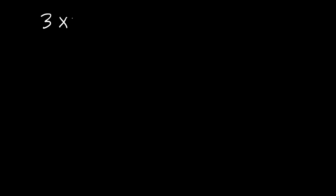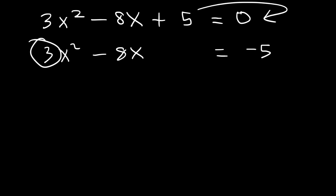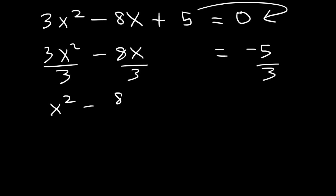Now let's look at another similar example. 3x squared minus 8x plus 5 equals 0. So let's move the 5 to the right side, so it changes from positive 5 to negative 5. And now, before we complete the square, let's get rid of the coefficient by dividing everything by 3. So we're going to have x squared minus 8 over 3 times x, and that's equal to negative 5 over 3.